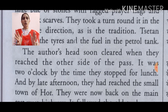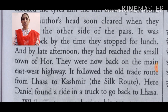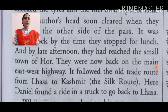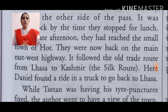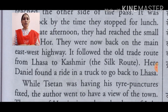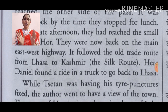It was time to stop for lunch — और इसमें वो lunch के लिए रुक गए। And by afternoon, they had reached the small town of Hor — और दोपहर तक वो पहुँच गए थे छोटे से कस्बे में जो कि Hor नाम की जगह थी। They were now back on the main east-west highway — अब वो वापस पहुँच गए थे जो main east-west highway था। It followed the old trade route from Lhasa to Kashmir — ये mark मिलता था जो पुराना व्यापारिक मार्ग था Lhasa से Kashmir तक — the Silk Route। Here Daniel found a ride in a truck to go back to Lhasa — यहाँ से Daniel ने एक truck में जगह ले ली और Lhasa वापस चला गया।